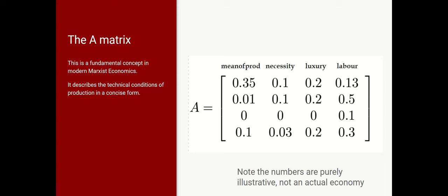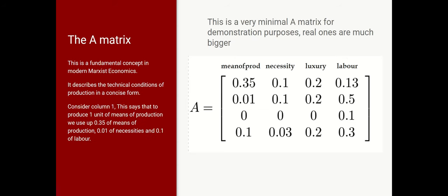Here's an example. I've given a basically three production sector plus labour model, which corresponds to the degree of disaggregation that Marx uses in Capital. Column one shows means of production, column two shows necessities, column three shows luxuries, and column four shows the production of labour power. Now, I'll go into how we interpret it. But note from the beginning, these are purely illustrative, not any actual real economy. And it's a very simple, minimal A matrix, because it only shows four production sectors, including the production of labour power. A real one would be much bigger.